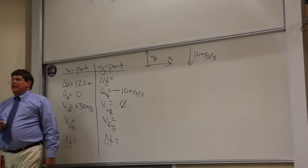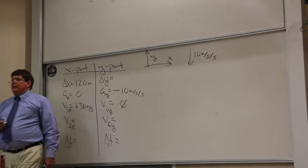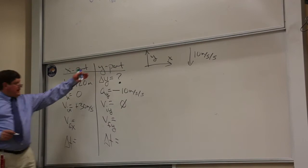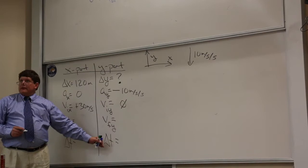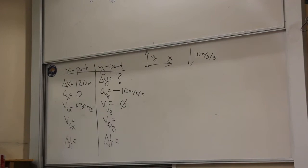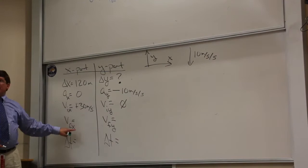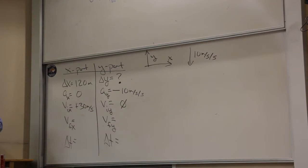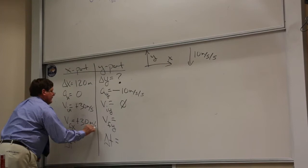To find how high the desk is, the variable I need is delta y — that's my goal. I only have two pieces of information in the y list, and I need three to plug and churn, so I use the x information to find time first, then move it over. We have three pieces of information in the x column — in fact four, because the zero acceleration means the initial and final x velocities will always be the same.